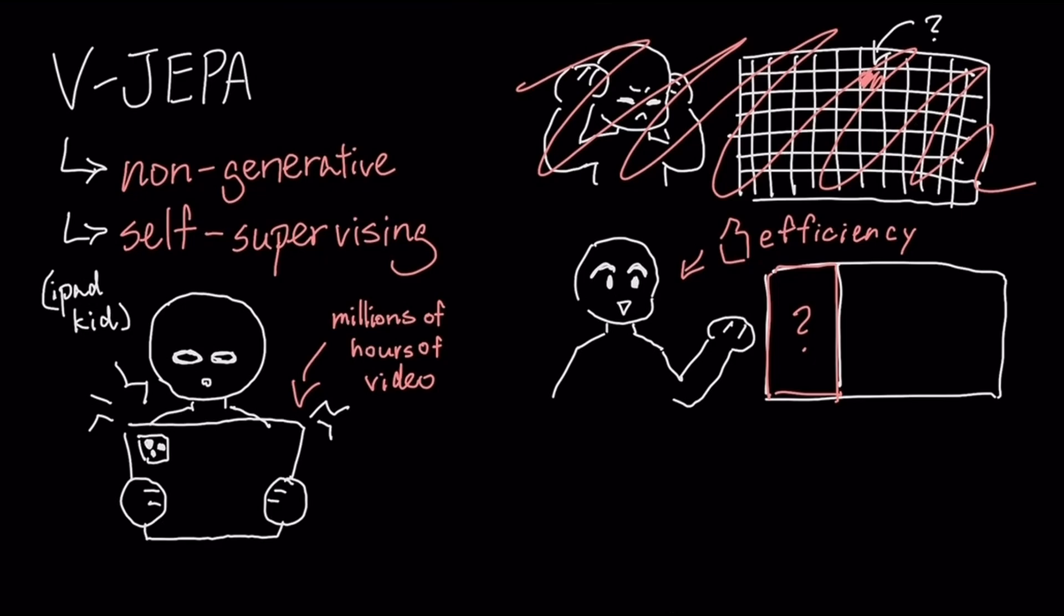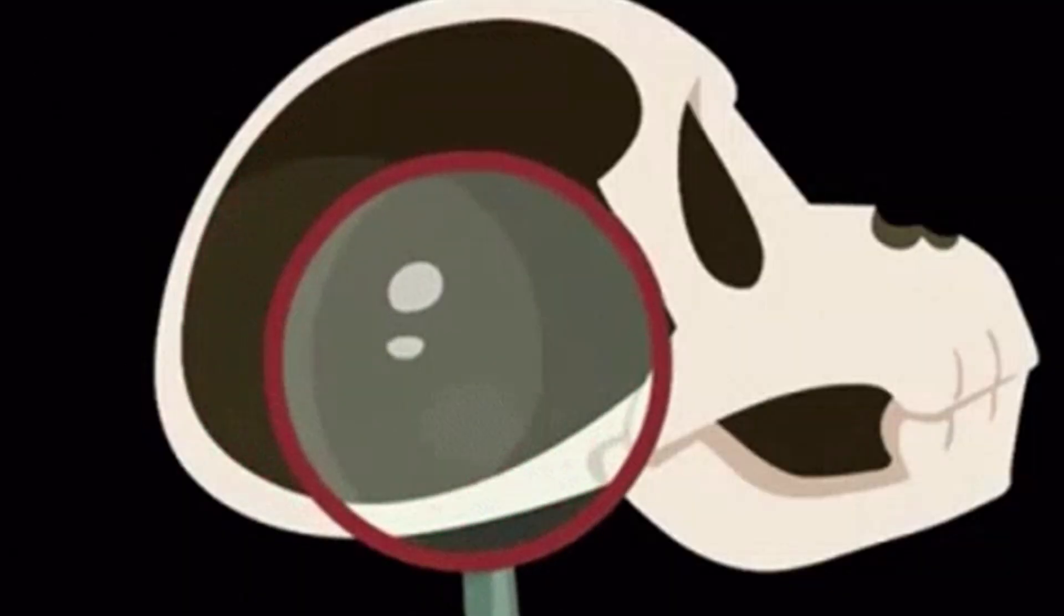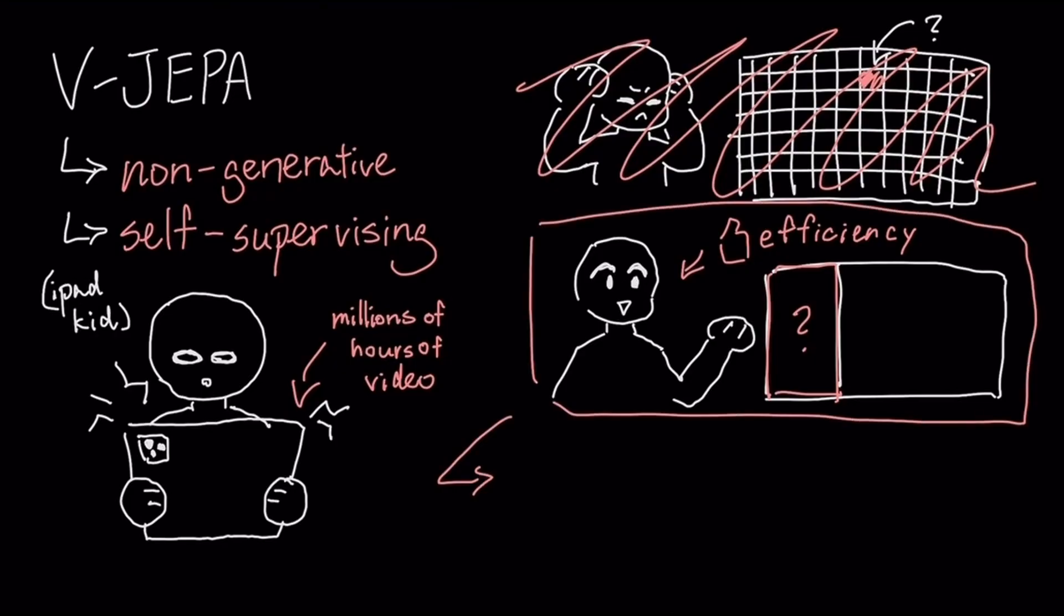This is a much more efficient way to learn. It forces the AI to focus on the underlying concepts of what's happening in the scene, the common sense, instead of wasting energy on irrelevant details like the movement of individual leaves on a tree.